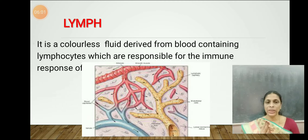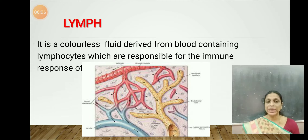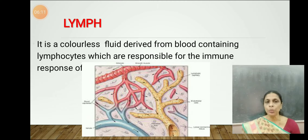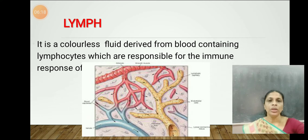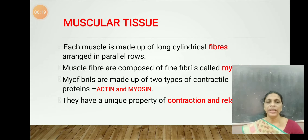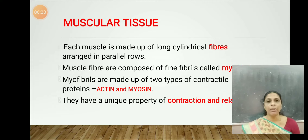Lymph is a colorless fluid derived from the blood containing lymphocytes which are responsible for the immune response of the body. So these are the two fluid connective tissues: blood and lymph. Now let us discuss about muscular tissue.